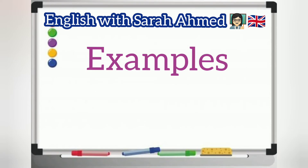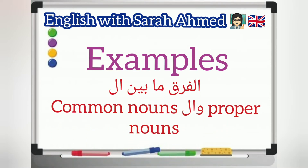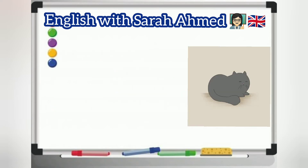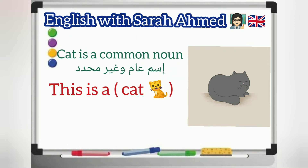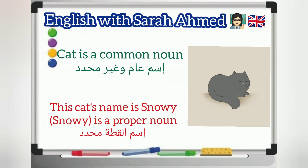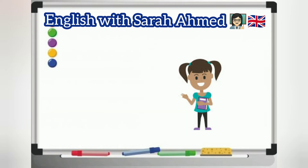Here are some examples about the differences between common nouns and proper nouns. What's this? This is a cat. A cat here is a common noun. And let's say this cat's name is Snowy — Snowy here is a proper noun.